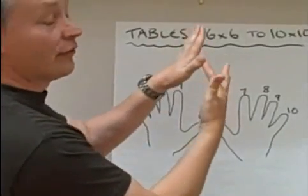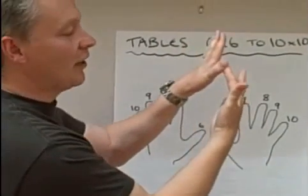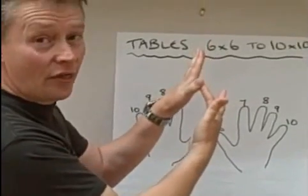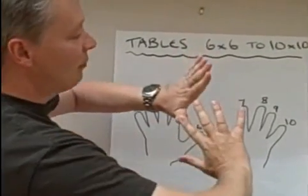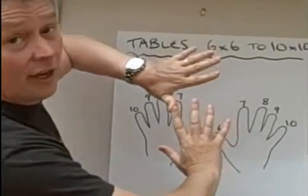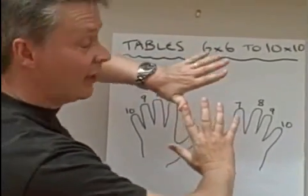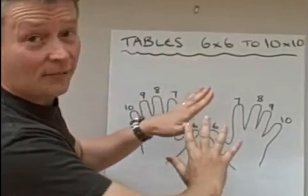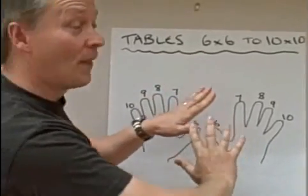Once again, the numbers in front are 10s. So I've got 10, my thumb, and then the two together, 20, 30. And then at the back I've got 4 on one side and 3 on the other. 4 times 3 is 12. 12 plus 30 is 42. So 6 times 7 is 42. Ask me another.